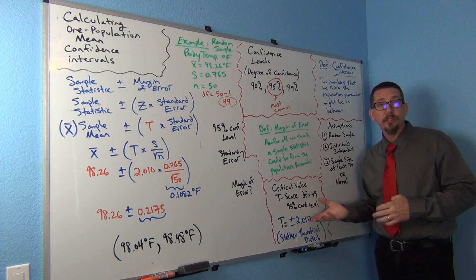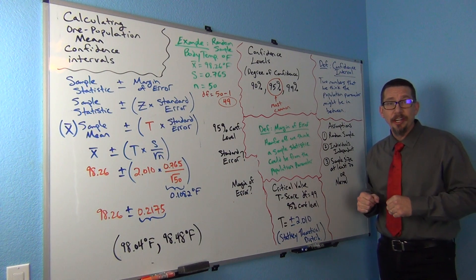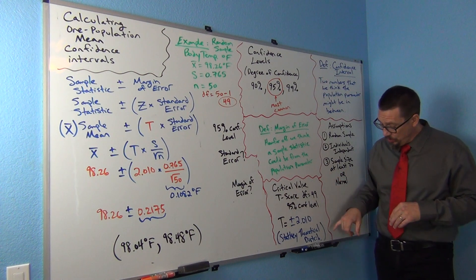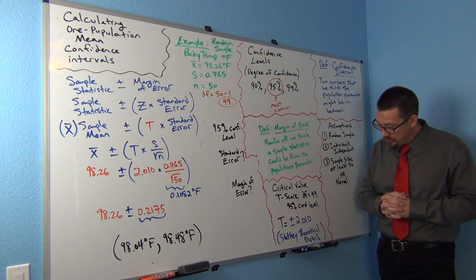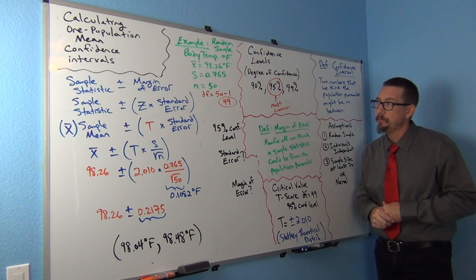In the old days we used to look those up on charts. But we're in the modern age, you should definitely be using technology and not using the charts so much. So here's the critical value t-score for the situation.